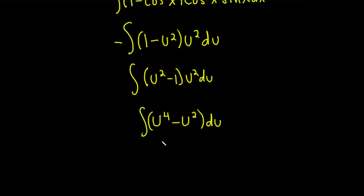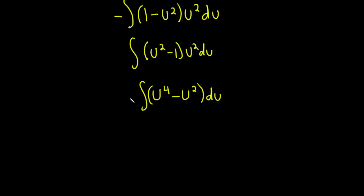Now we can integrate using the power rule. The power rule says you just add 1 to the exponent and divide by the result. So when you do that, you get u to the 5 over 5. And notice I'm not putting equal signs. You could put equal signs. I'm just working from the top down. Minus u cubed over 3 plus c. There are equal signs here. I'm just not writing them.